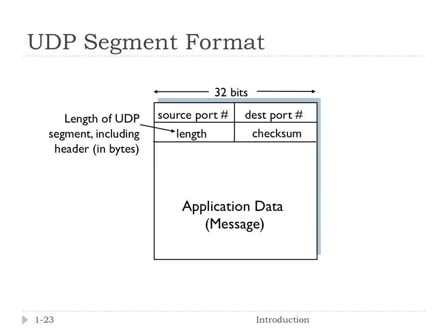Let's look at the format for a UDP segment. It's fairly simple — as we said, it has a very small header. Imagine this diagram is 32 bits wide. We have a source port number and a destination port number, each 16-bit numbers. The length field is the length of the UDP segment including the header, measured in bytes — it's the number of bytes in the UDP segment from start to end.